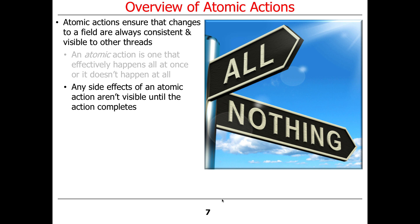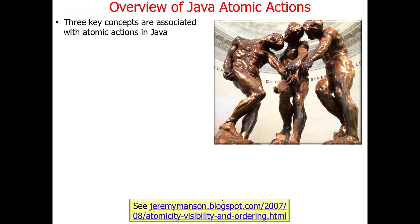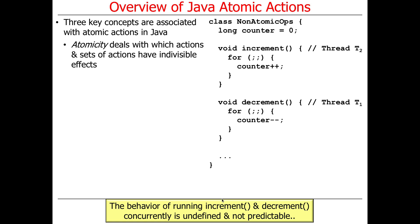Like your transporter example — any side effect of an atomic action is not visible to other threads until the action completes in its entirety. It's all or nothing, not half-baked, half-done. There are three typical concepts associated with atomic actions in Java, and this article has a great summary of what I'm about to cover. The first issue is atomicity.